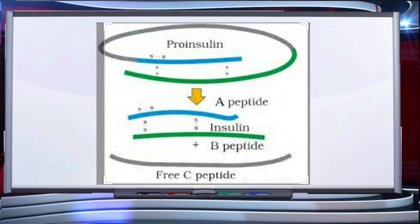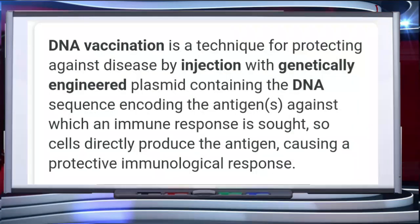Another important use of recombinant DNA technology in biotechnology is the production of vaccines through genetic engineering. Such vaccines are called recombinant vaccines, also called subunit vaccines or second-generation vaccines. For example, the Hepatitis B vaccine. DNA vaccination is a technique for protecting against disease by injection with a genetically engineered plasmid containing the DNA sequence encoding the antigen against which an immune response is sought.